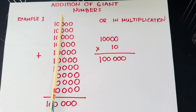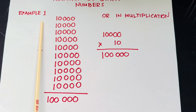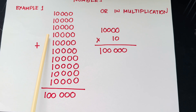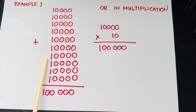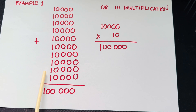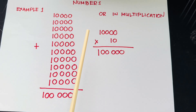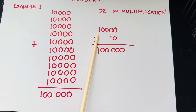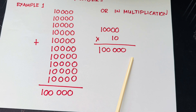And now join me and let's do a recap. Addition of giant numbers. Example number 1: 10,000 plus 10,000 plus 10,000 plus 10,000 plus 10,000 plus 10,000 plus 10,000 plus 10,000 plus 10,000 plus 10,000 is equals to 100,000. Or in multiplication, 10,000 multiplied by 10 is equals to 100,000.